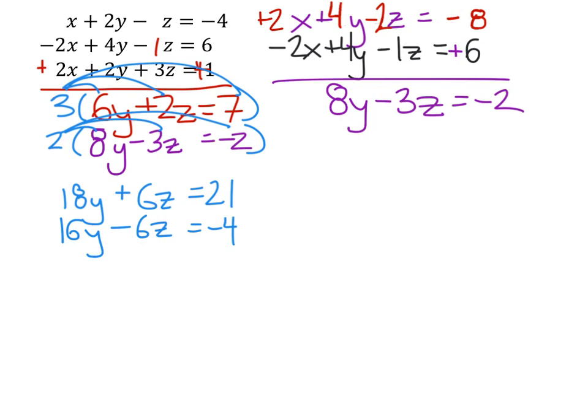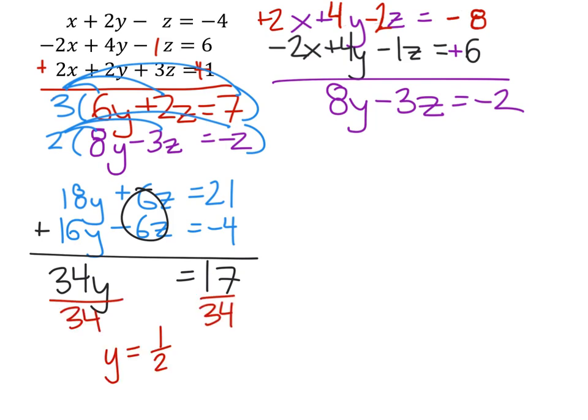We can now eliminate those z's. The 6z creates a zero pair with that negative 6z, so these cancel out. Then we have 18y plus 16y, giving us 34y equals 21 minus 4 is 17. To solve for y, we'll just divide by 34 on both sides, and we find that y is a positive one-half.